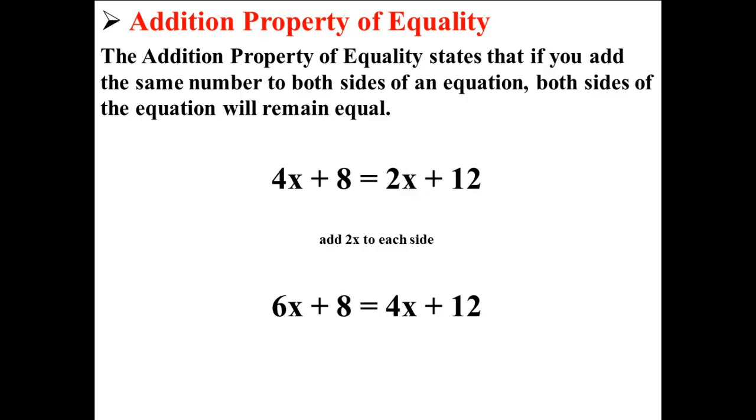Above we have the equation 4x plus 8 equals 2x plus 12. If we added 2x to each side, we would have 6x plus 8 is equal to 4x plus 12. This is according to the addition property of equality.